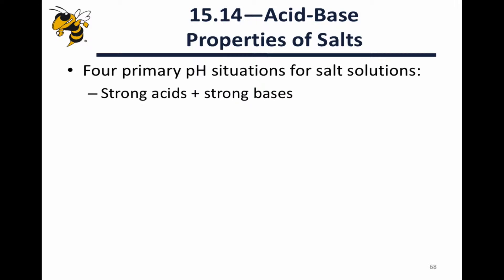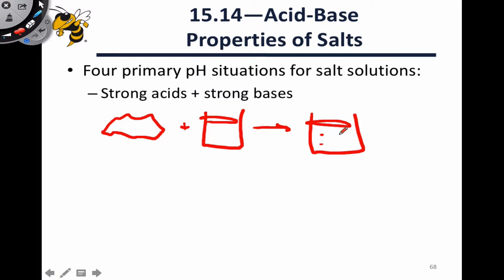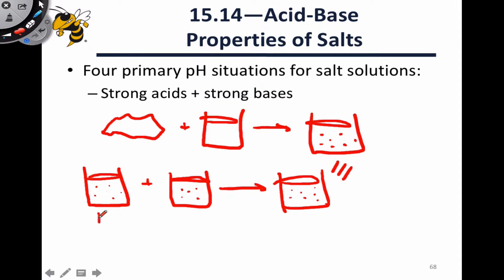We can think about four pH situations for salt solutions by thinking about these neutralization reactions. The same ideas apply whether we start with the solid salt and dissolve it in a beaker of water to generate the salt solution, or we start with two solutions of a strong acid and a strong base in water and react them together with the appropriate stoichiometry to generate the salt solution. The final result is the same: if the concentration of the salt is the same, then dissolving the solid achieves the same pH as mixing an acid with a base.